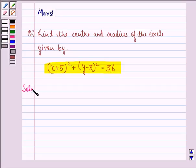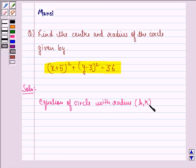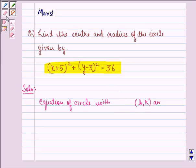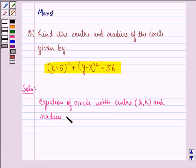Let us start with the solution. We know that the equation of a circle with center (h,k) and radius r is given by (x-h)² + (y-k)² = r².